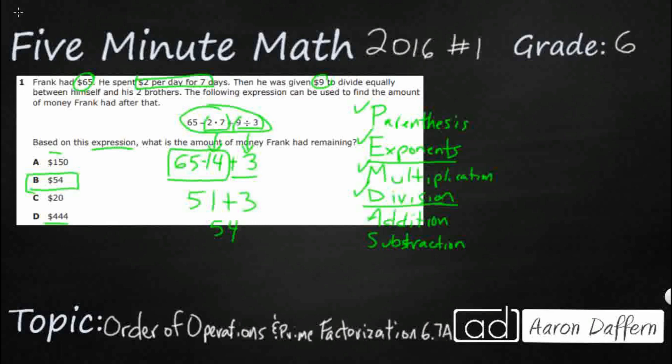So what happens if we don't use any type of order of operations? Well, what if we just did 65 minus 2 times 7 plus 9 divided by 3 in just order? So 65 minus 2, that's going to be 63. And then what if I did my times 7? So 63 times 7. What in the world is that? That's 21. That's going to be 42.